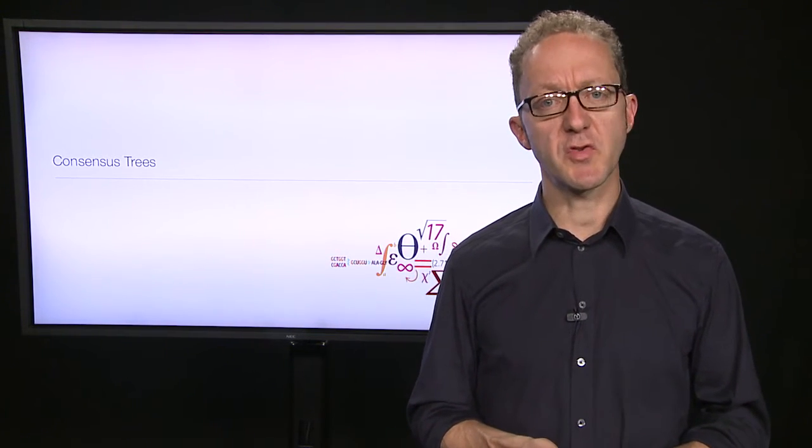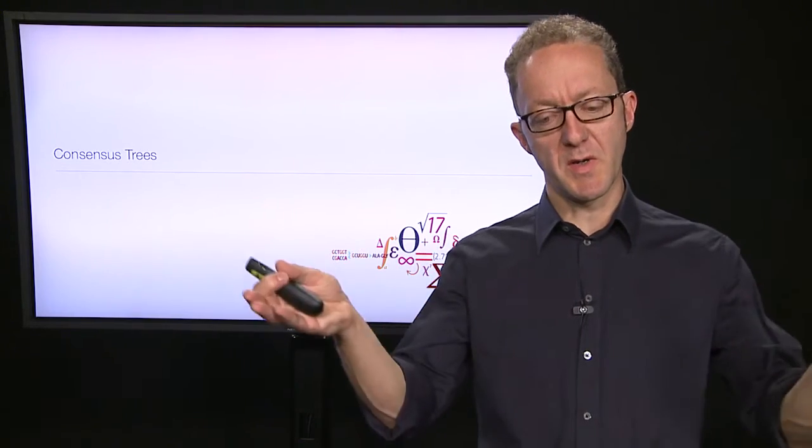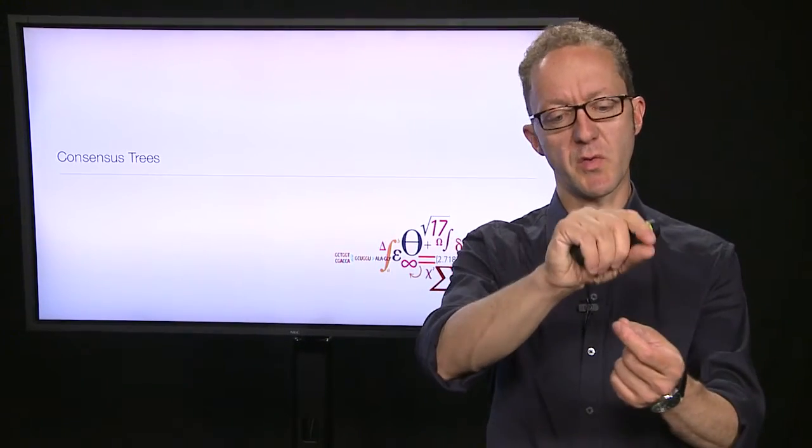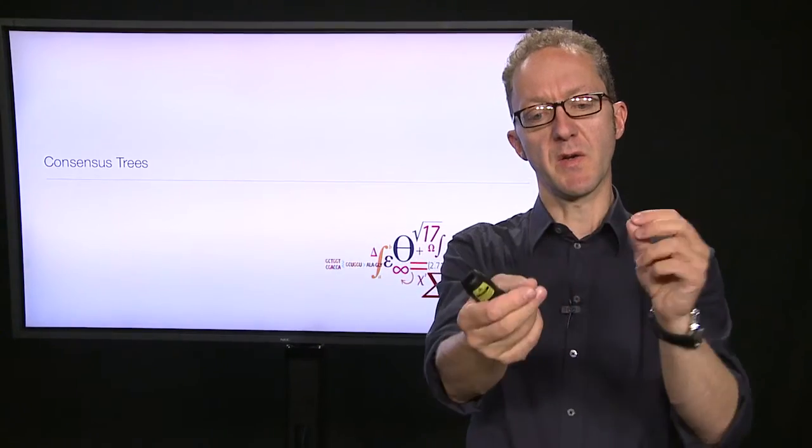The first thing that's important to realize is that the 200 or so trees that we might get out of such an analysis will not be wildly different. They will be, on the whole, very similar. They will have very similar topologies where a lot of things are in common between them, and then there will be individual minor differences — one group moved from one place in the tree to a slightly different place, a few clades maybe switch around, but usually minor things.